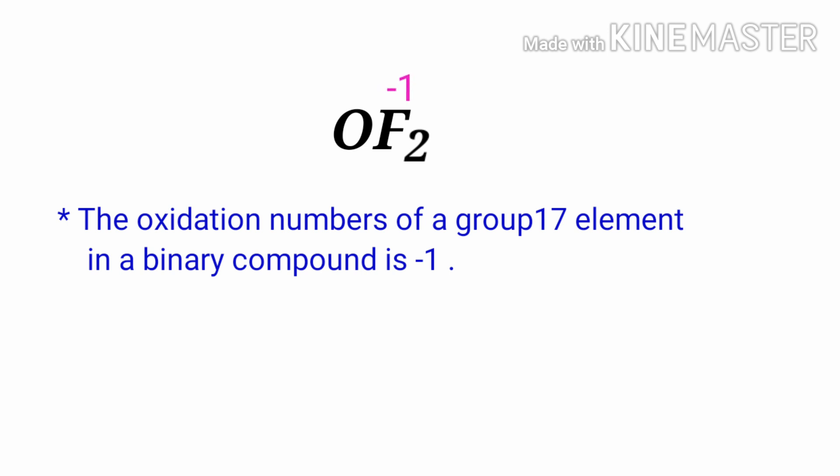We can write the oxidation number of the element above its symbol and the total number of the oxidation numbers of the atoms below its symbol. In the F2 element, there are two fluorine atoms present, so the oxidation number of F2 is minus two.